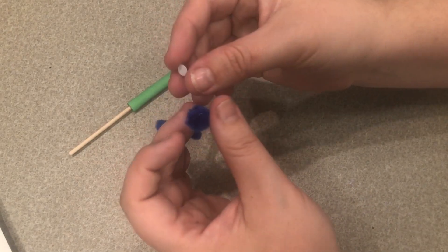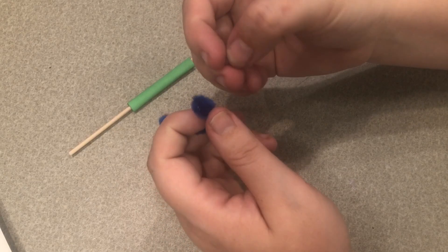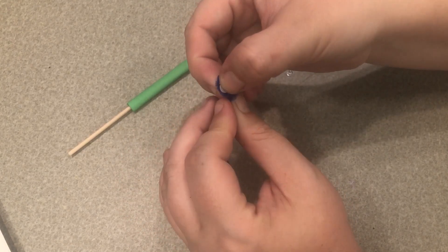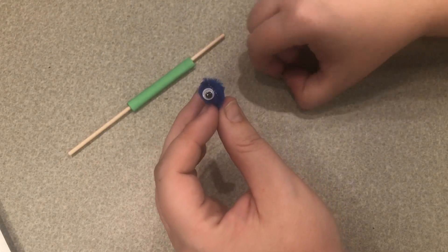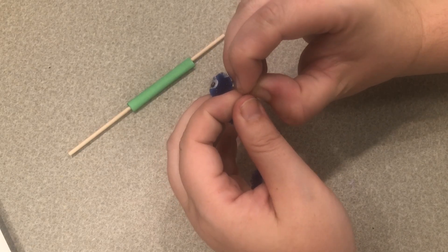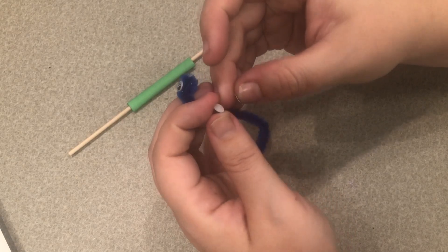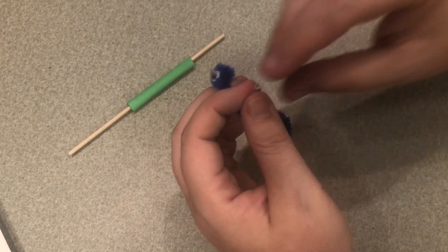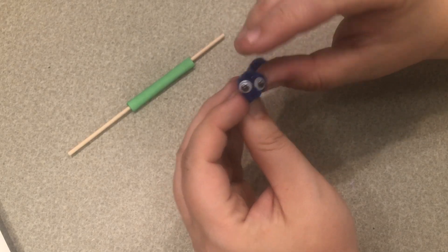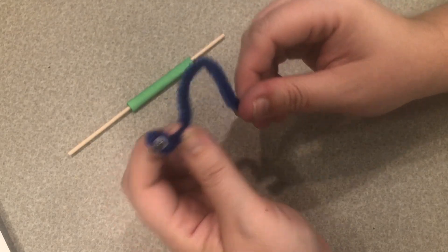Now we're going to take our googly eyes and they should peel the backing off so that you can just stick them on but you can also use glue if you need to. So we're going to put these eyes on our little round edge that we've made to make a little worm face, a little caterpillar face, whichever you want to call it.